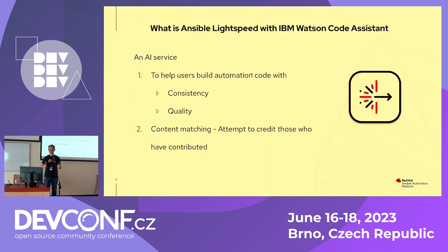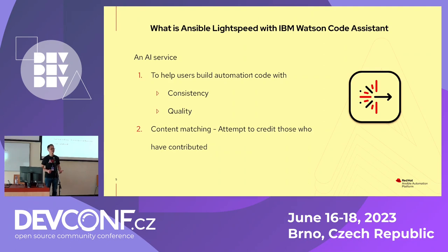What is Ansible Lightspeed with IBM Watson Code Assistant? It is two things: one is Ansible Lightspeed, and the other is IBM Watson Code Assistant. Combining the two, it's an AI service. We do two things: one is to help users, like automation engineers, to build automation code with consistency and quality. And the second thing — not obvious but very important — we try to do content matching, meaning we try to credit those who contribute the code that this model has been trained on.